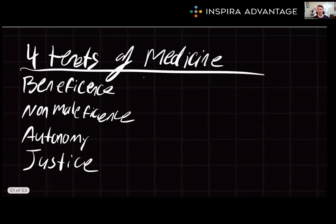Something relevant to everybody getting ready to take the MCAT are the four tenets of medicine. These are the four things that every doctor must agree to do: beneficence, or promoting well-being; non-maleficence, avoiding harm; respect for autonomy, which means honoring patients' decisions; and justice, having a fair distribution of resources and treatment. These principles guide medical professionals in their ethical decision-making and patient care.